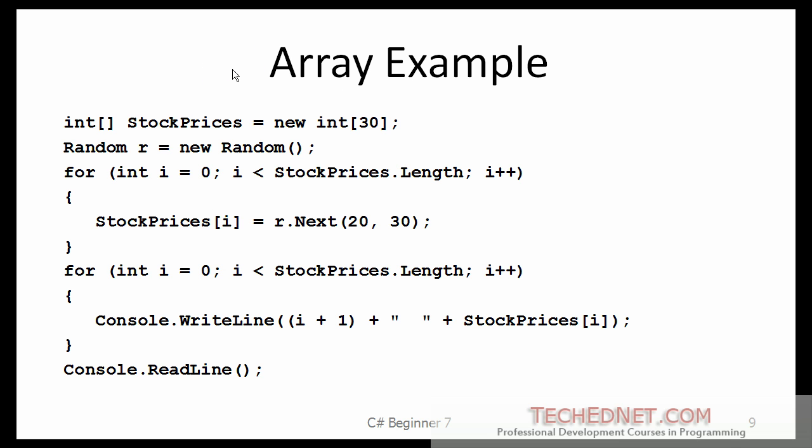Here is another array example. I want to show you how you can use loops with arrays. Again, I am using this random object, which I will use to generate random numbers. I have created an array called stock prices, which has 30 elements, all of the type integers. And then, I set up a for loop here, which goes from i equals zero to i less than the length of that array. This is a good way of setting up a loop for looking at or dealing with all the elements of an array. This will make sure that you never are outside the bounds of an array. Zero through i less than stock prices dot length. Here, I am filling the array with random numbers, somewhere between 20 and 29.